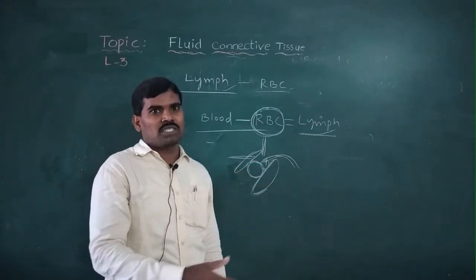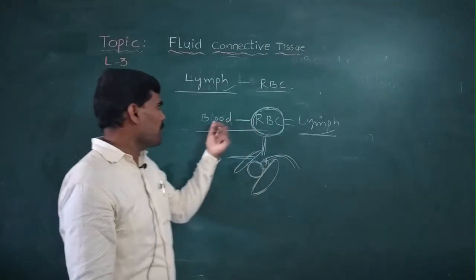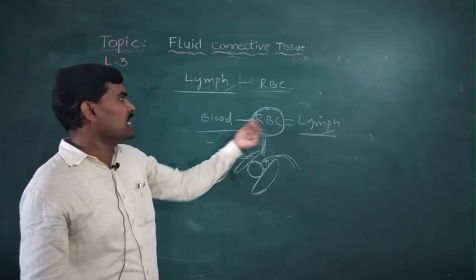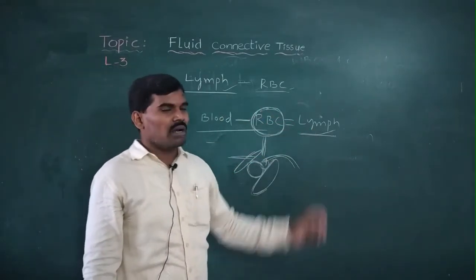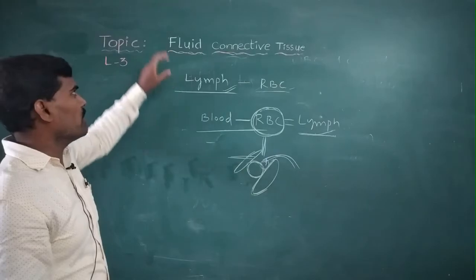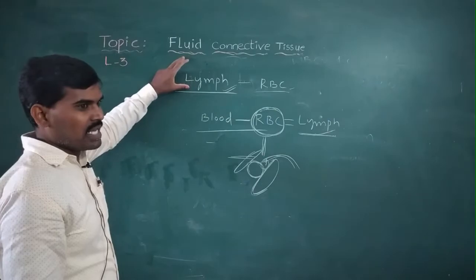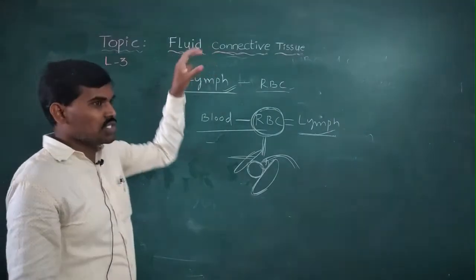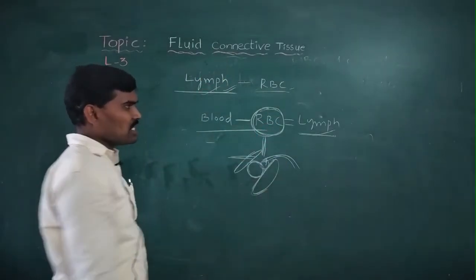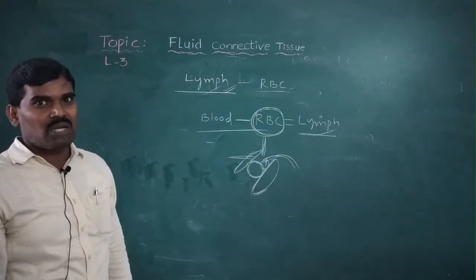Lymph is colorless because it lacks RBCs. It is a colorless fluid matrix. Blood is slightly alkaline fluid connective tissue, while Lymph is a colorless fluid matrix. Lymph is transported through the blood and lymphatic system.